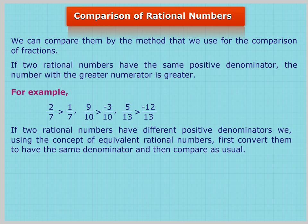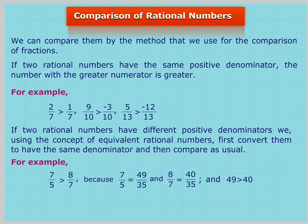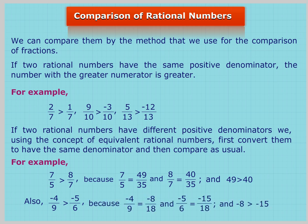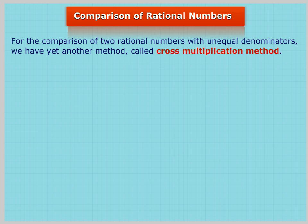If two rational numbers have different positive denominators, we use the concept of equivalent rational numbers, first converting them to have the same denominator and then comparing as usual. For example, 7/5 is greater than 8/7 because 7/5 = 49/35 and 8/7 = 40/35, and 49 is greater than 40. Also, -4/9 is greater than -5/6 because -4/9 = -8/18 and -5/6 = -15/18, and -8 is greater than -15.